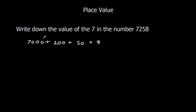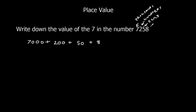So we've got 7000 — those are the thousands. We've got 200s. We've got 50, which means we've got 5 tens — 50 is 5 tens. And we've got 8, which means we've got 8 ones.